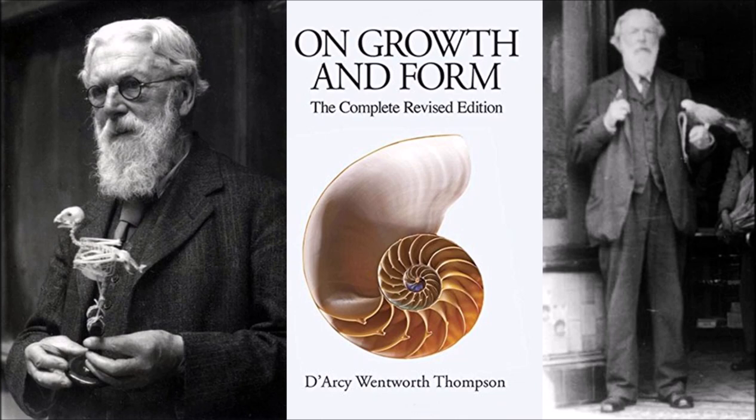On Growth and Form had set itself a tough challenge. Matthew Jarron is Curator of Museum Services at the University of Dundee, and there he looks after the D'Arcy Thompson Museum, which houses some of the vast collection of bones, specimens and objects that Thompson amassed. I think what he was really interested in was looking at the way that organisms grow and why different shapes recur in nature — things like hexagonal symmetry in the honeycomb, but many other spiral forms and other things as well. Why do these same shapes keep occurring?